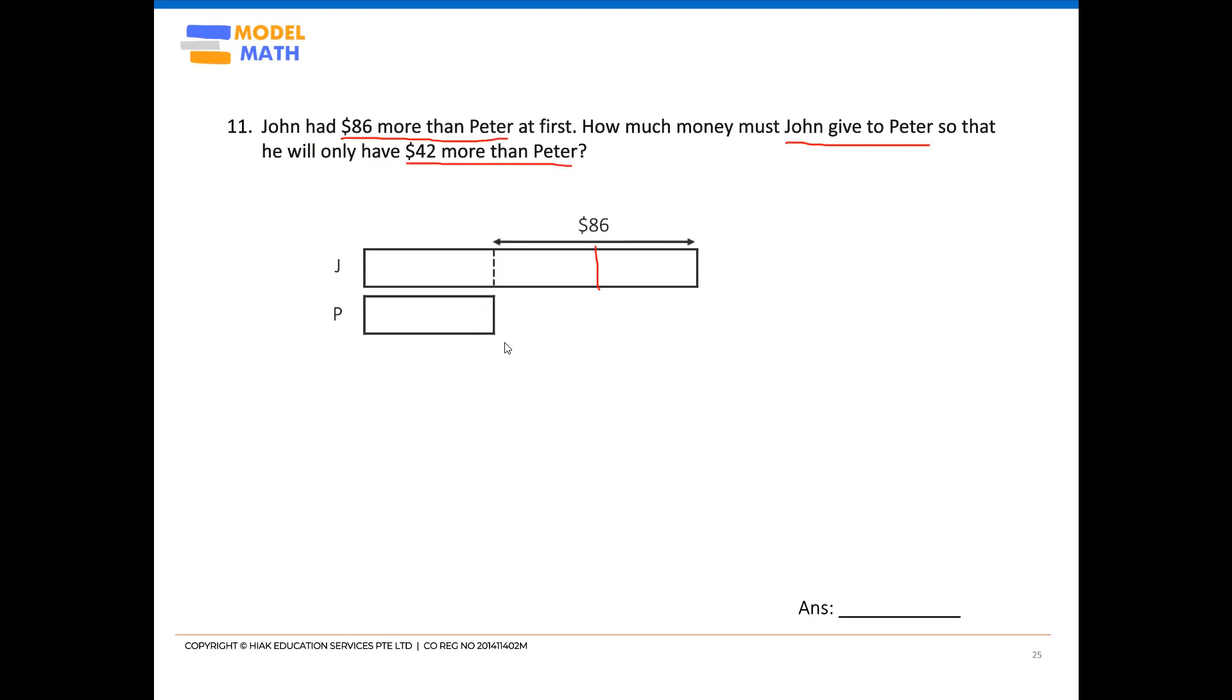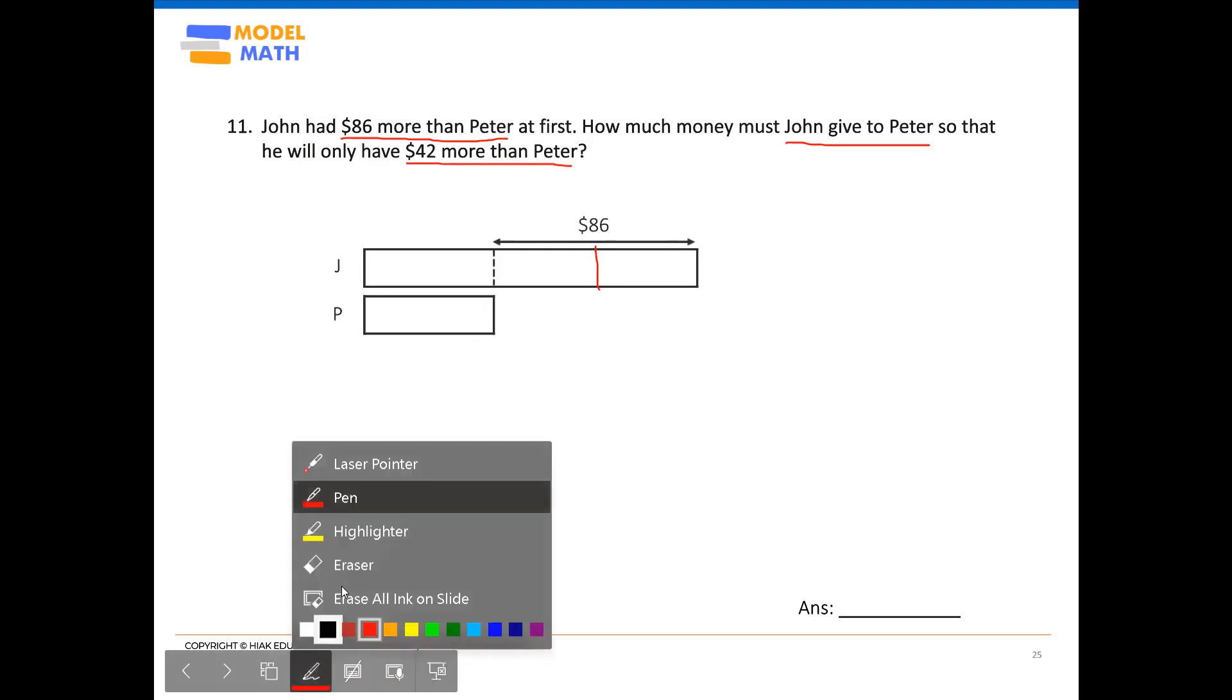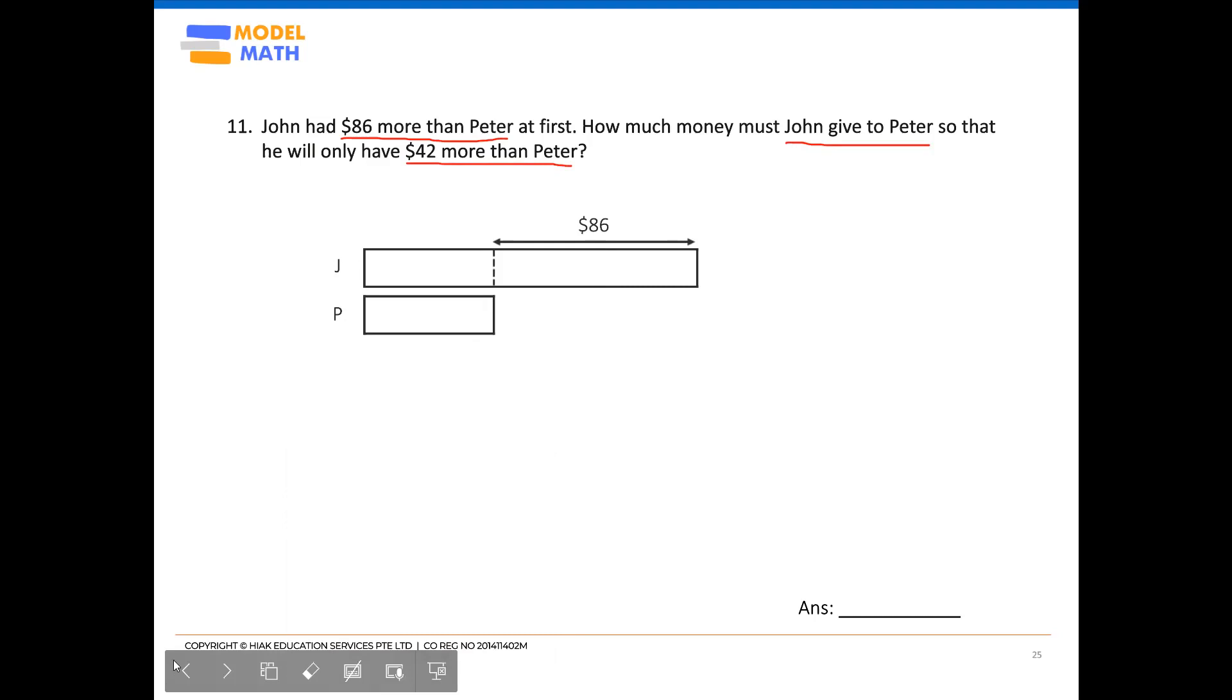However, the question states that even after John gives a certain amount of money to Peter, he would still have more money than Peter. Therefore, naturally, you would cut John's model, the $86, less than half of it.